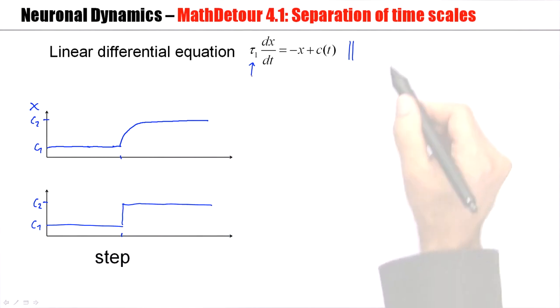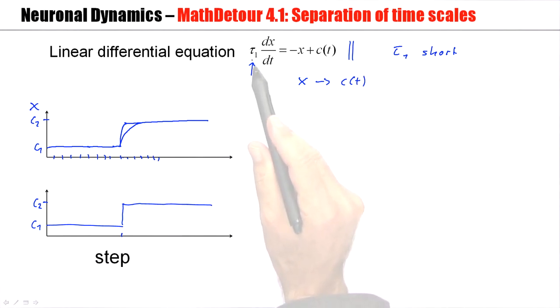Now, suppose tau 1 is short. That means it goes very quickly up to the new value. Now, if I don't look at a very fine time scale, but if I step back a little bit and look at some steps, then it looks as if the variable X has jumped. It has responded immediately. Here it was still below, and now suddenly it's up here. So, X approaches the value C of T rapidly. Rapidly means there's a time constant tau 1, but tau 1 is short.